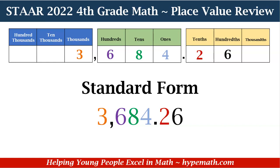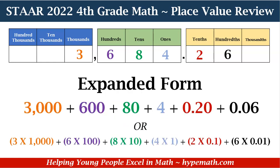When we're asked to write this number in standard form, it's like you usually write the number. But if we're asked to write it in expanded form, there are two ways. The first is 3,000 plus 600 plus 80 plus 4 plus 0.20 plus 0.06. The other way is 3 times 1,000 plus 6 times 100 plus 8 times 10 plus 4 times 1 plus 2 times 1 tenth plus 6 times 1. Either way, this is the expanded form.